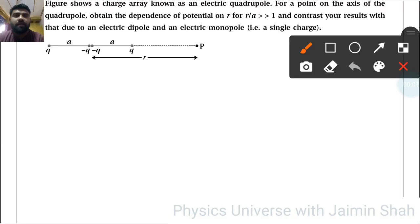Suppose a charge array known as an electric quadrupole. For a point on the axis of the quadrupole, obtain the dependence of potential on R for R by A much greater than 1, and contrast your result with that due to an electric dipole and an electric monopole.